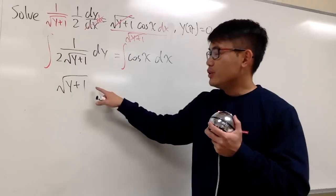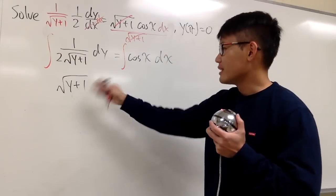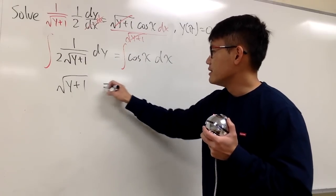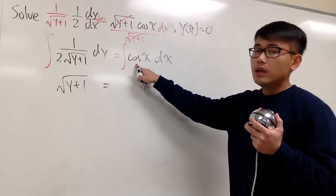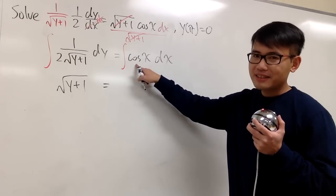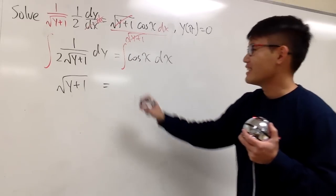Okay, so right here, this is it. You don't have to worry about the plus constant on the left-hand side. We can just write this down. This is equal to, and the integral of cosine x is positive sine x.